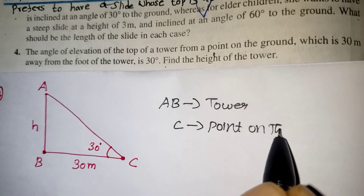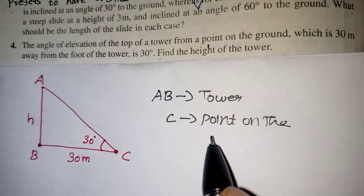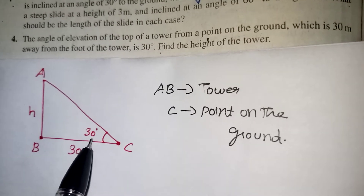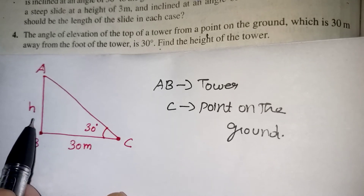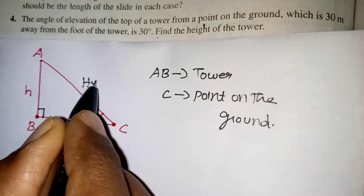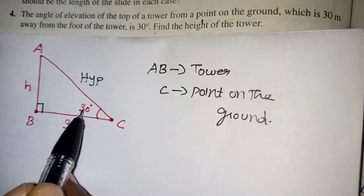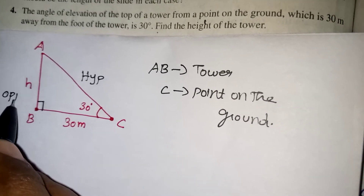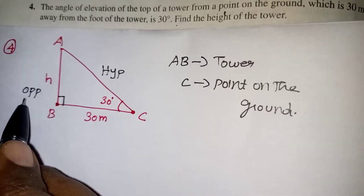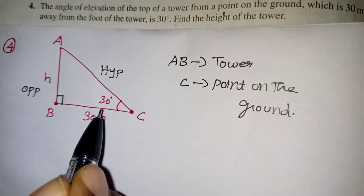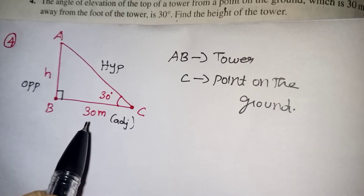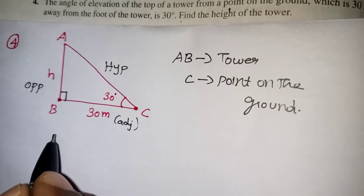Point on the ground — you should always write that so the examiner can understand what you are representing. Now the angle is given, the adjacent side is given, and the opposite side is what they are asking. Whenever a triangle is given, first identify which is the 90-degree angle and which is the hypotenuse. The side opposite to the given angle is the opposite side, and the remaining side is the adjacent side. Since the question is about opposite and adjacent sides, and hypotenuse is not needed, we use tan theta.